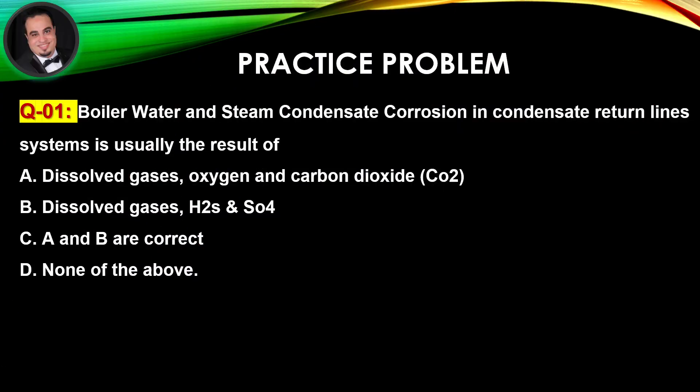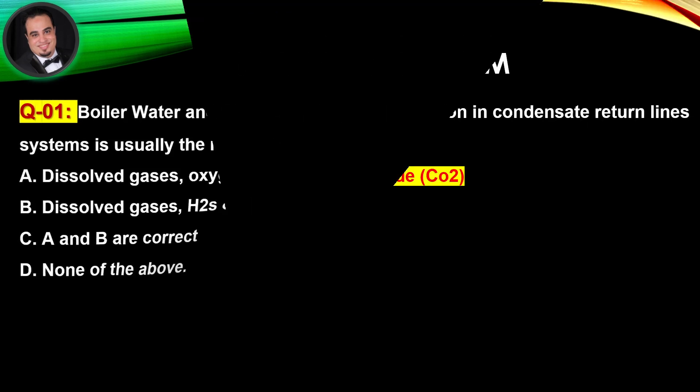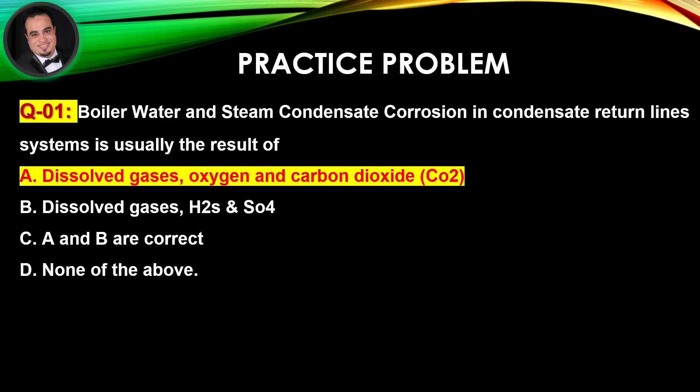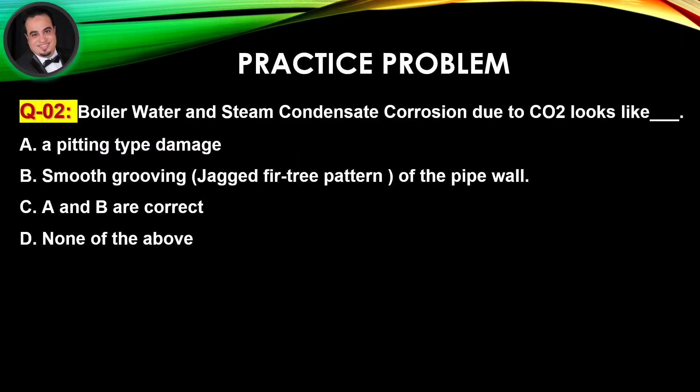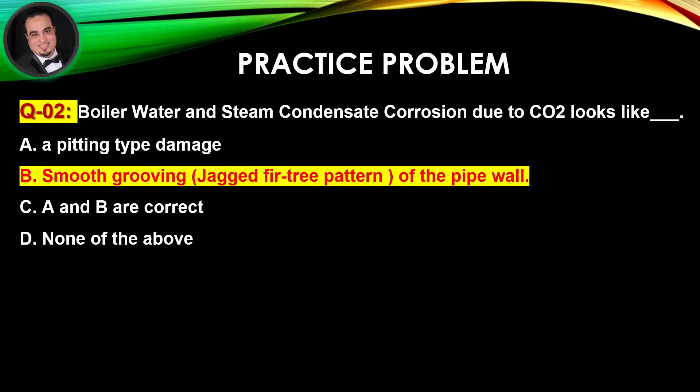Practice time. Question number one: boiler water and steam condensate corrosion in condensate return line systems is usually the result of — answer is A. Question number two: boiler water and steam condensate corrosion due to CO2 looks like — answer is B.